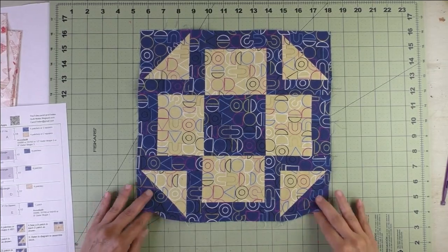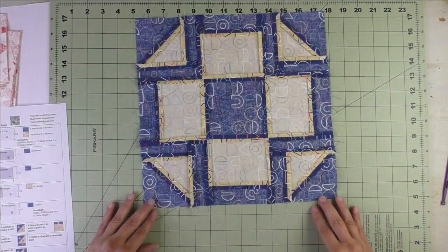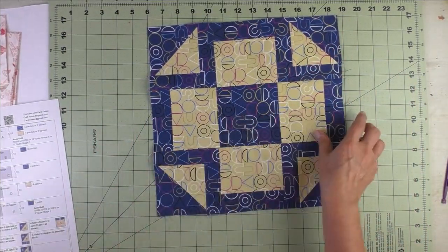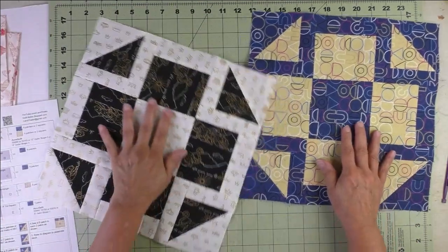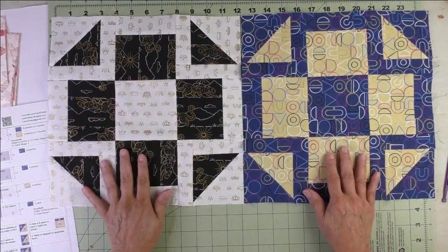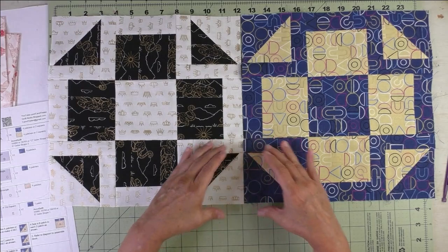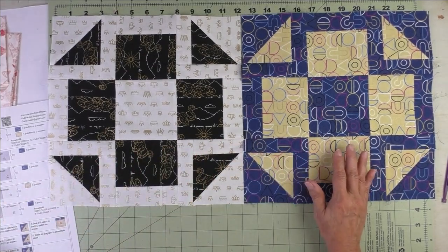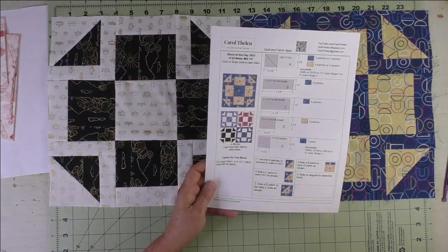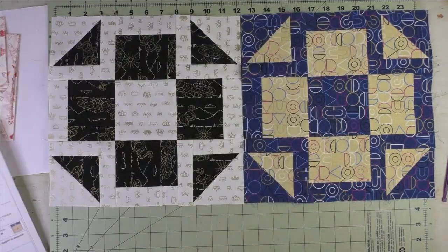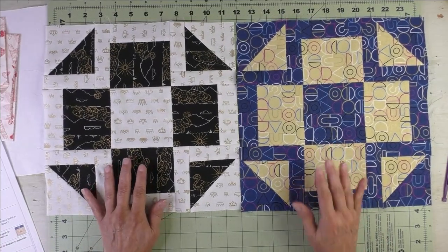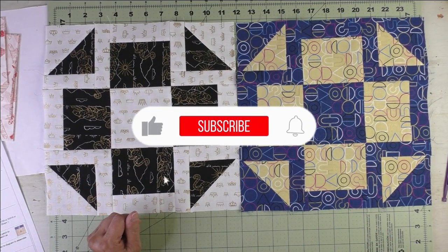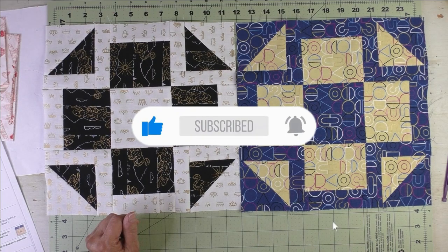Here is the block. Now here is the block with the fabrics reversed. I like the little square it will make down here and you can see that better in the diagram of the quilt on the instructions. Thank you for watching. Don't forget to subscribe to my channel and click the bell to be notified of future videos.